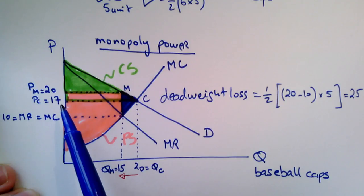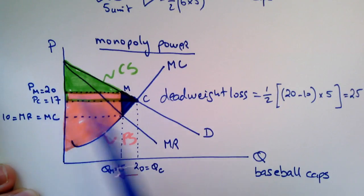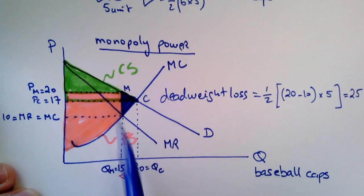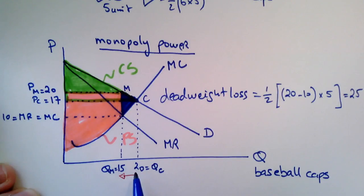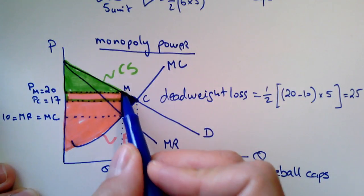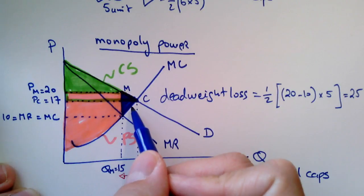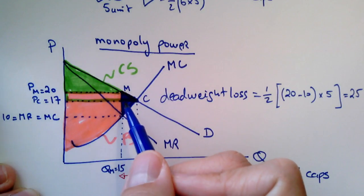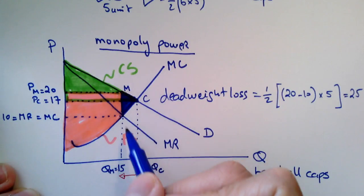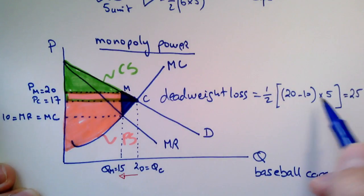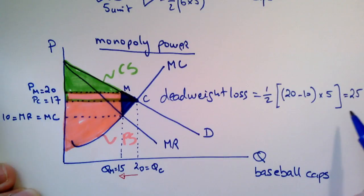We are producing less output at a higher price, and therefore we have a deadweight loss. The price used to be $17; now it's $20. At this higher price, many consumers are not willing to purchase those baseball caps. The deadweight loss results from fewer caps being produced — 15 instead of 20. To calculate the deadweight loss triangle: the height is 20 minus 10, which is $10, and the base is 20 minus 15, which is 5. Half of 10 times 5 gives us $25 — that's the deadweight loss associated with this firm having monopoly power.